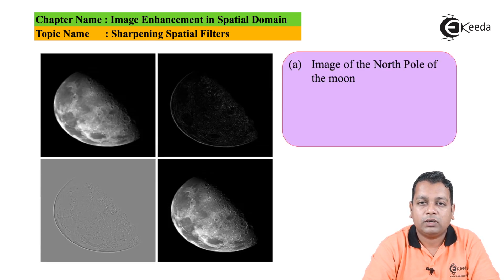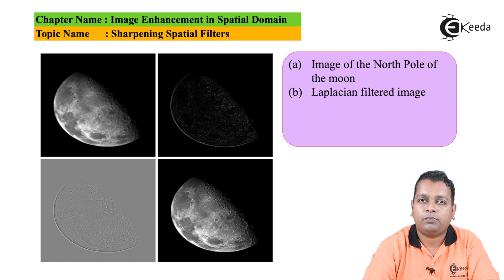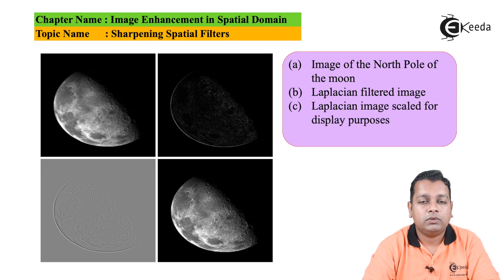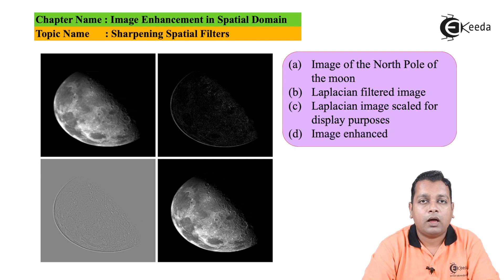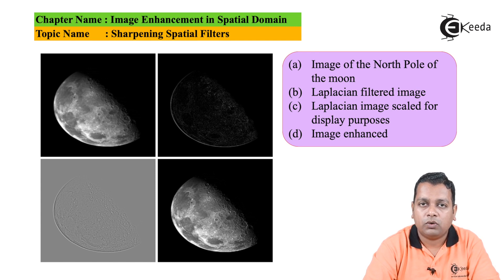As an example, we have an original image of the north pole of the moon. After applying Laplacian filtering, we obtain a Laplacian filtered image. This is then scaled for display purposes. After final enhancement by combining the Laplacian result with the original, we obtain the resultant sharpened image. The spots on the moon become sharper — this is due to the use of Laplacian filtering followed by final enhancement.